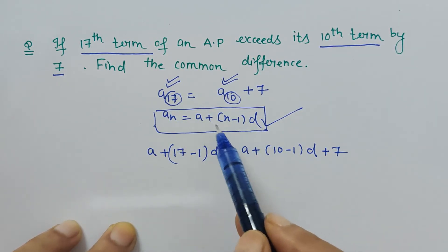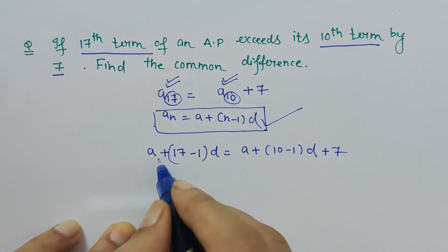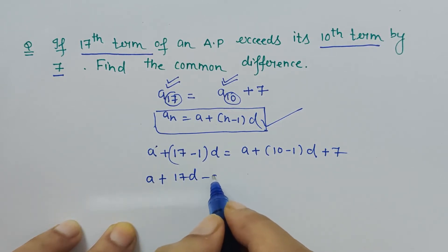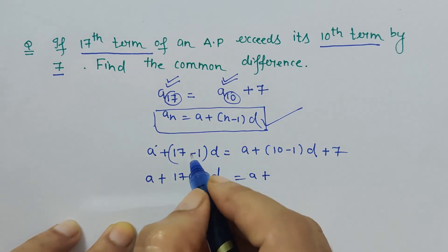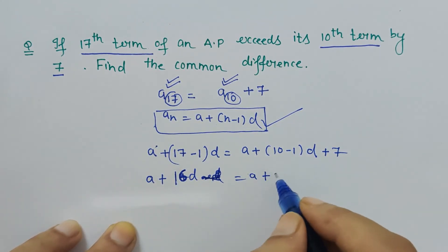Now let's simplify it. So a plus 17d minus d is equal to a plus... it can be written as 16d, right? So it is 16d. a plus 10 minus 1 is 9d plus 7.